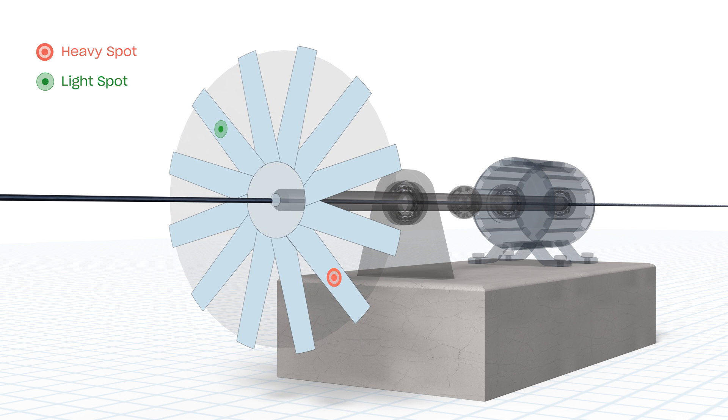Rotating machinery is balanced either by adding weight to the light spot or removing weight from the heavy spot, similar to the method mechanics use to speed balance the tires of a car.